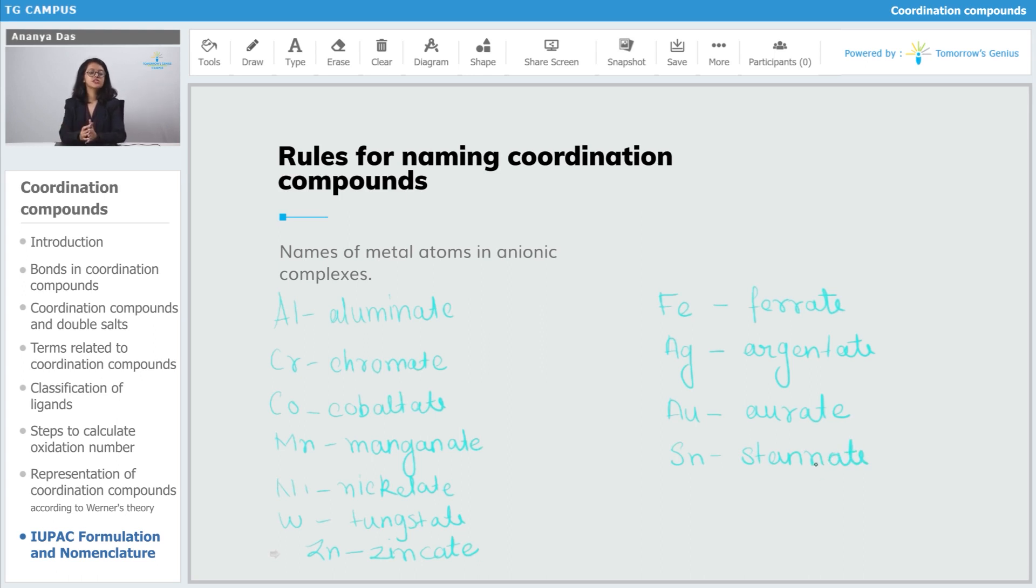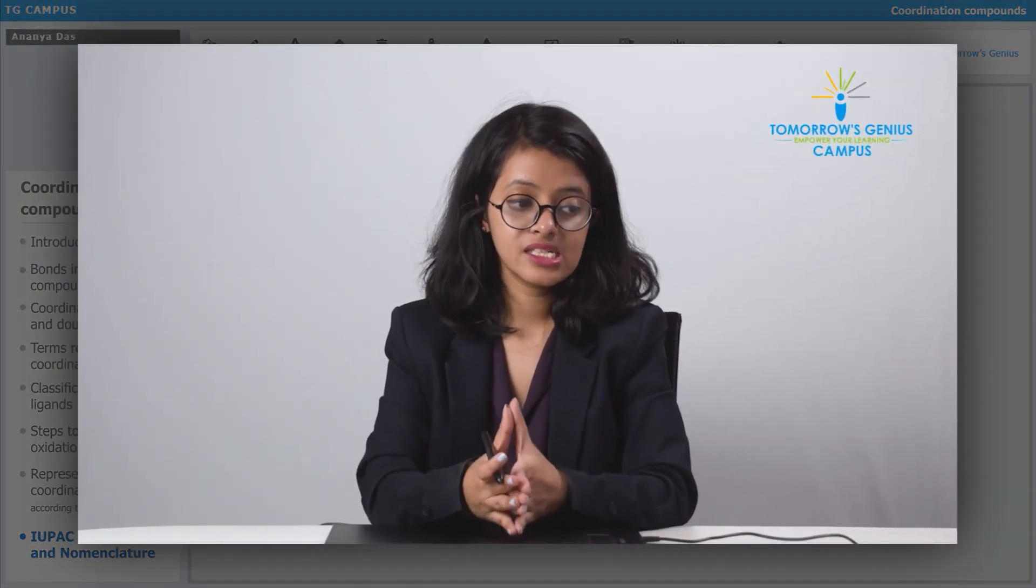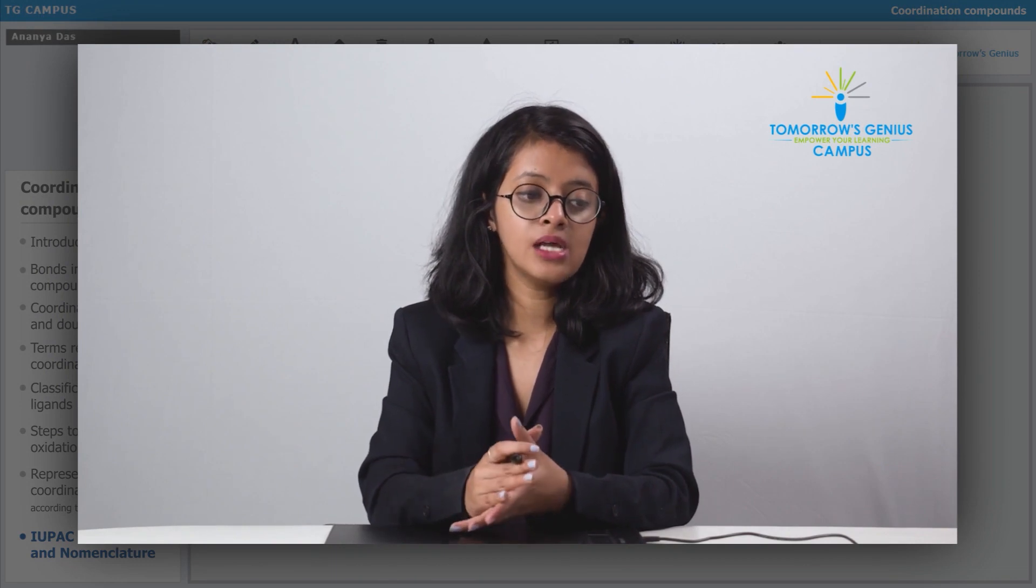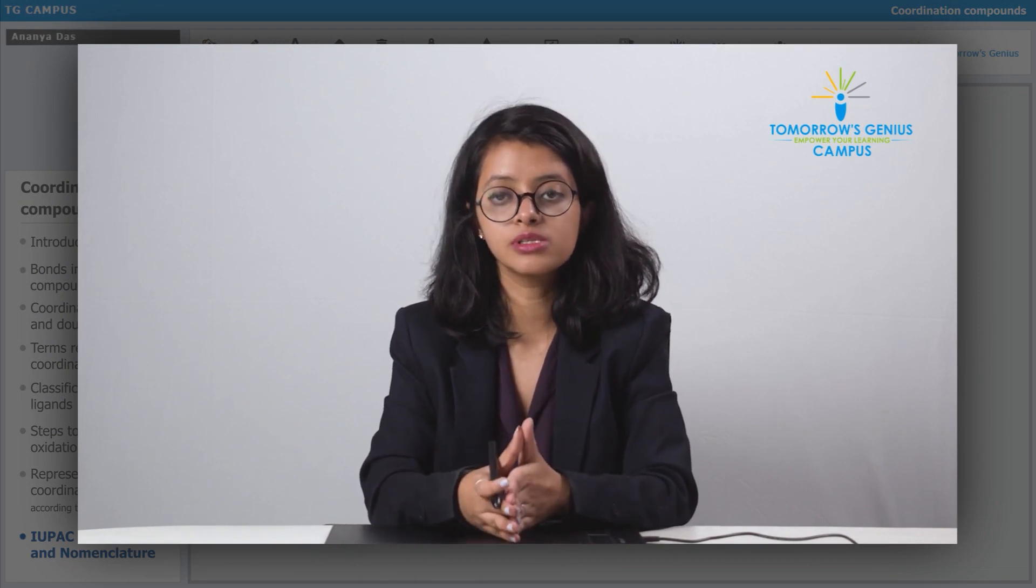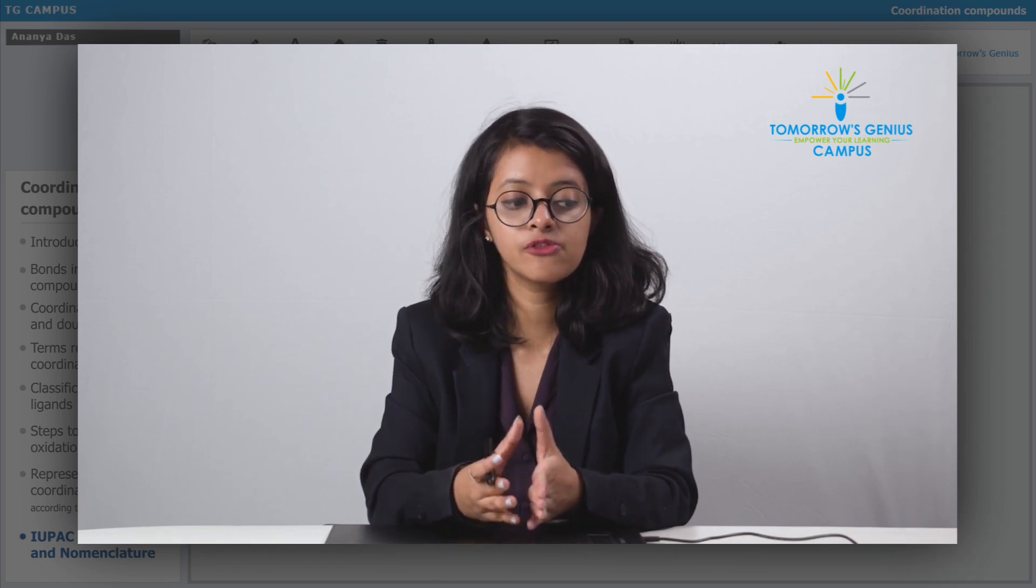These were the names of the metal atoms, how the name of the metal atom changes when they are present in anionic complexes. Now, the next is that the oxidation state of the metal has to be written in Roman numerals and has to be enclosed in the parenthesis at the end of the name of the coordination sphere.